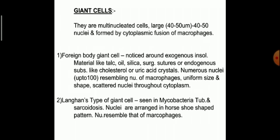What are giant cells? Giant cells are seen particularly in chronic inflammation — they are large multinucleated cells up to 40–50 microns in size. They can have 40 to 50 nuclei and are formed by cytoplasmic fusion of macrophages. Foreign body giant cells are noticed around exogenous insoluble material such as talc, oil, silica, surgical sutures, or endogenous substances like cholesterol or uric acid crystals. They can have up to 100 nuclei, with uniform nuclei of macrophage appearance scattered throughout the cytoplasm.